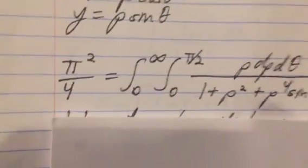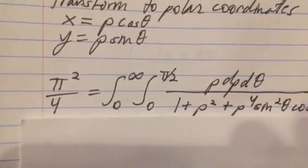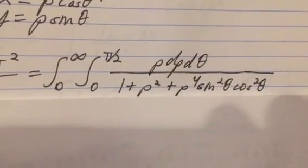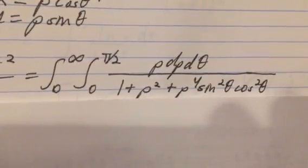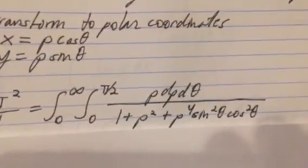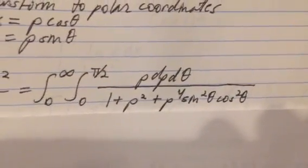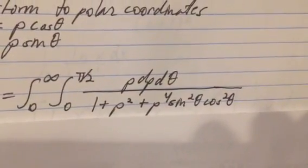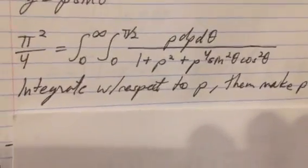So once again we have the same thing on the left side, pi squared over 4 is equal to integral from 0 to infinity, and then integral from 0 to pi over 2, that's going to be for the angle, for theta. And once you multiply that out, you get 1 plus rho squared plus rho to the fourth, sine squared times cosine squared, and so we can integrate with respect to rho.